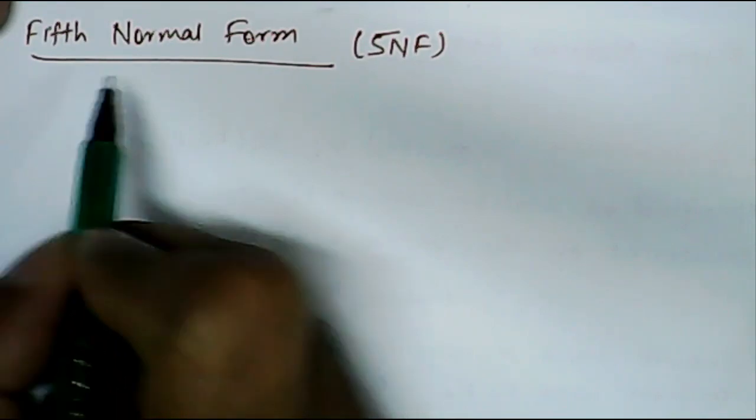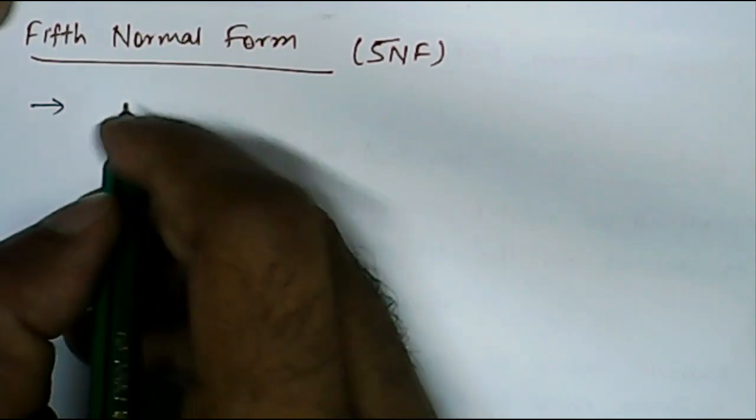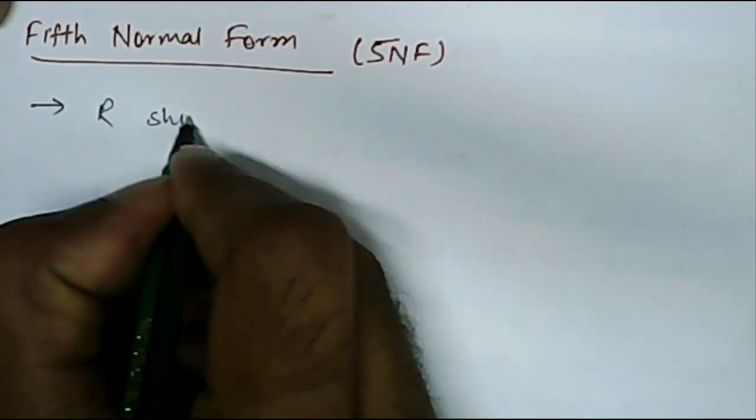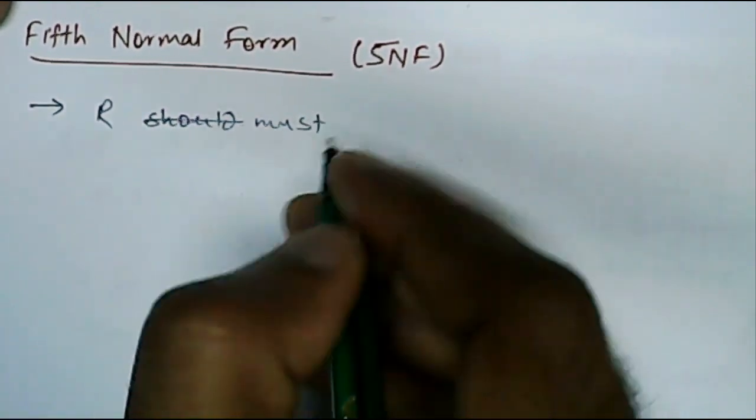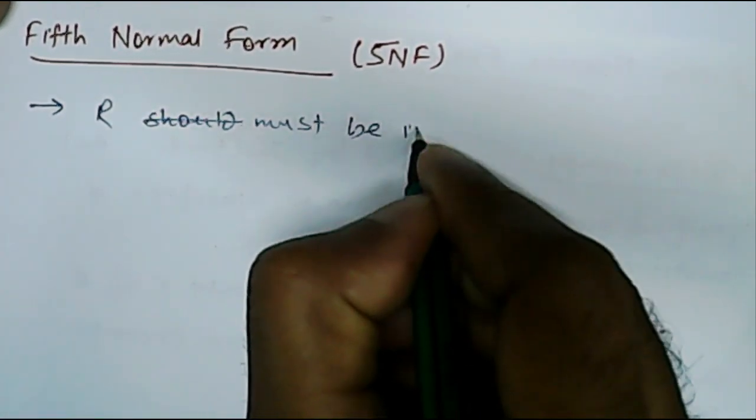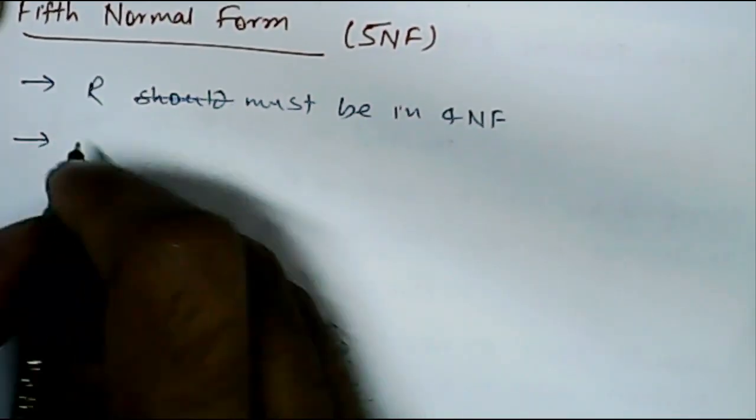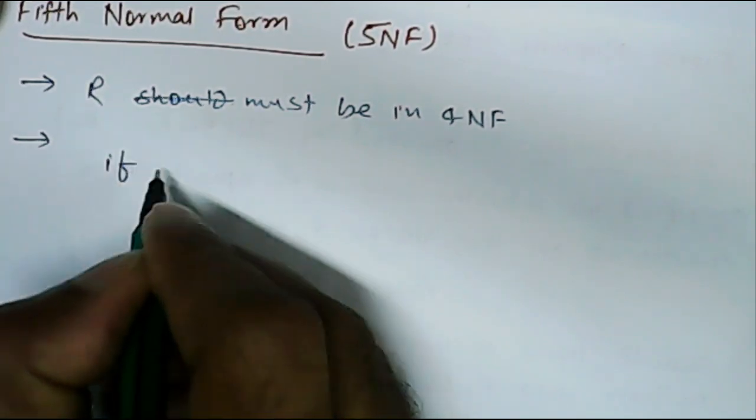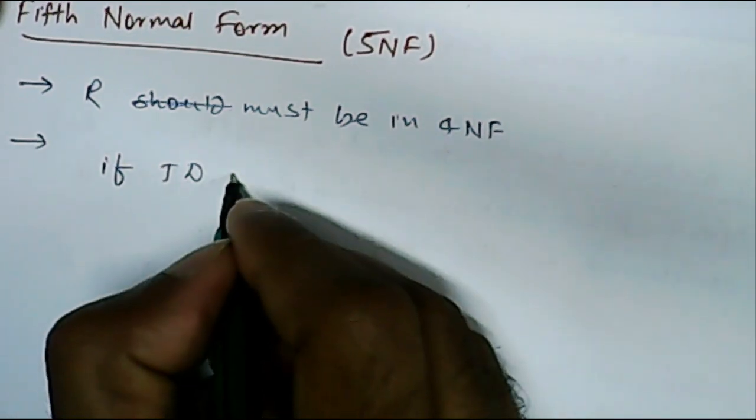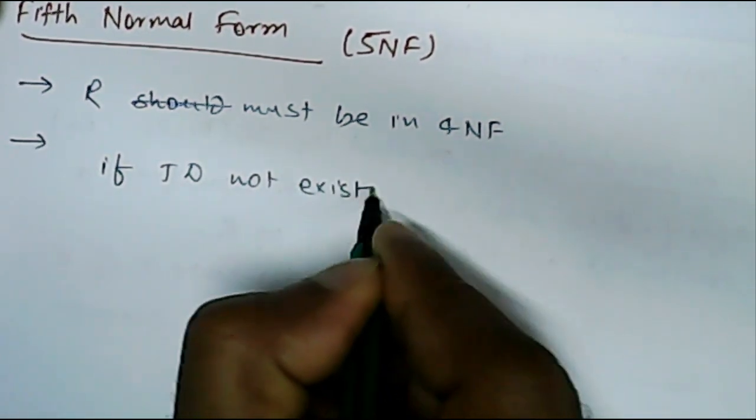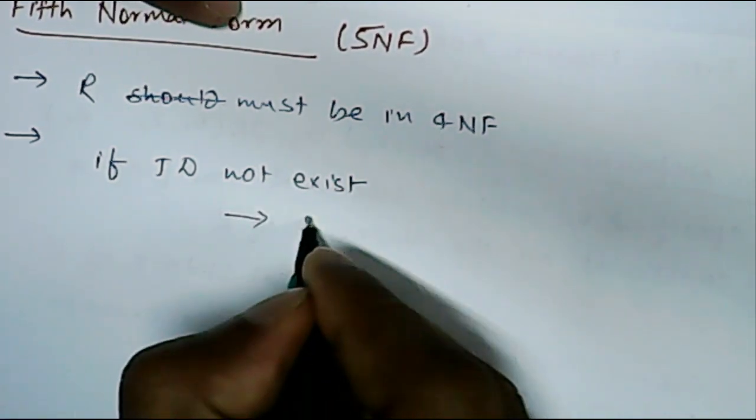Now let's understand the conditions for fifth normal form. The first obvious condition is the relationship R must be in 4NF. Then the next condition is whether joint dependency exists or does not exist. If joint dependency does not exist, then it will be in 5NF.